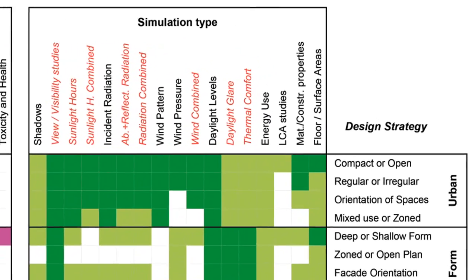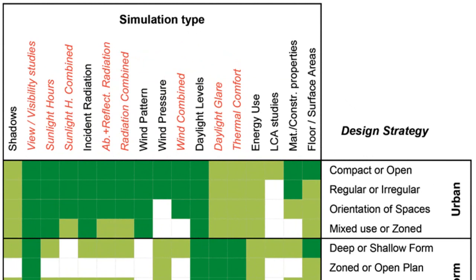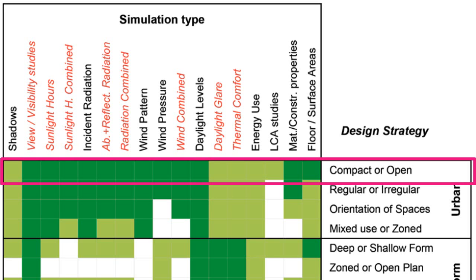Let me try to give an example by zooming in on the simulation types in relation to design strategies and scale of design. As we can see on the simulation types, there is a difference between black and red. The red text is simulation. The dark green I would say is more important than light green. Let's take compact or open as an example at the urban level. Shadows will have — or could point you in the direction of — whether it should be compact or open. The same with incident radiation, because that is related to daylight.